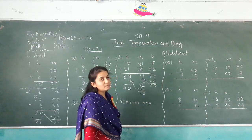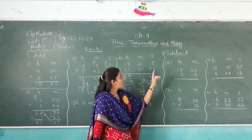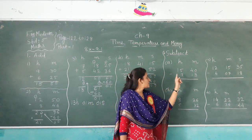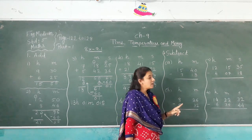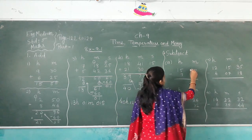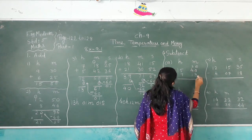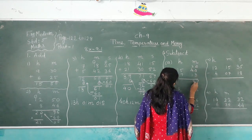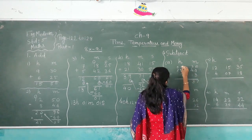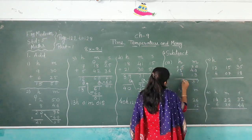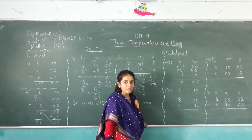Question number 2 — subtract hours and minutes. 15 hours 14 minutes minus 7 hours 13 minutes. First, 14 minus 13: borrow to get 10 minus 3 is 7, giving 37 minutes. Then 15 minus 7 is 8. So the answer is 8 hours 37 minutes.